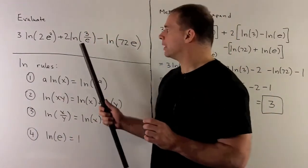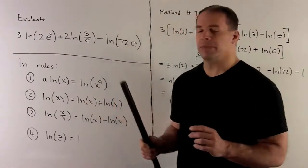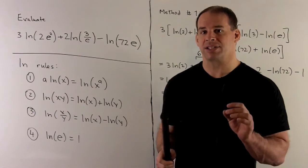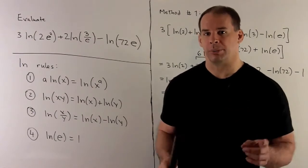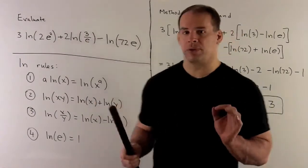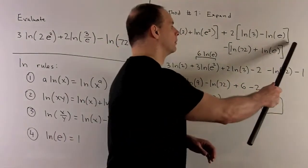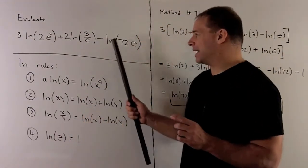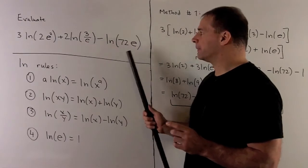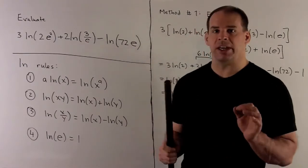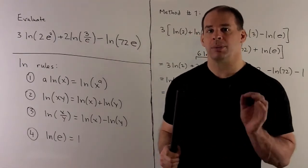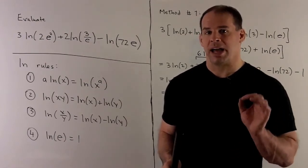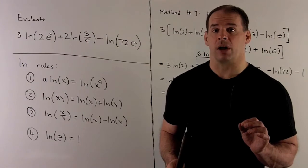For the next term, we have 2 times natural log of 3 over e. I'm going to write natural log of 3 over e as natural log of 3 minus natural log of e, in parentheses, and pick up the 2 later on. Finally, minus natural log of 72e becomes minus the quantity natural log of 72 plus natural log of e, with the minus sign on the outside.